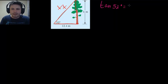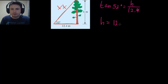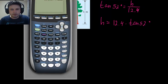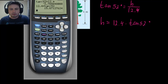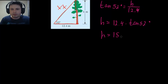Tangent of 52 degrees equals the opposite side h divided by 12.4. Rearranging: h equals 12.4 times tangent of 52. Important calculator tip: enter the number first — type 12.4 then multiply by tangent of 52 — because if you enter tangent of 52 first, some calculators will compute the tangent of the entire expression including 12.4, giving a wrong answer. Doing it correctly: 12.4 times tangent of 52 equals approximately 15.9 meters.